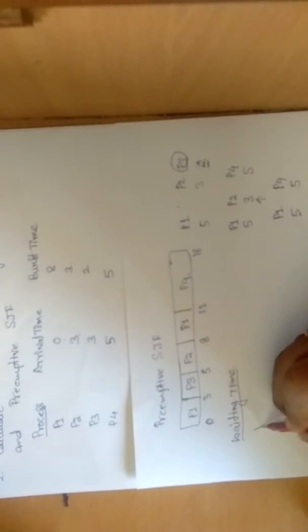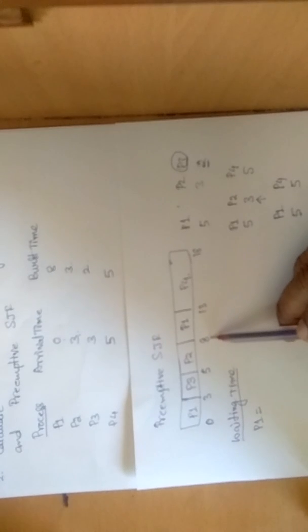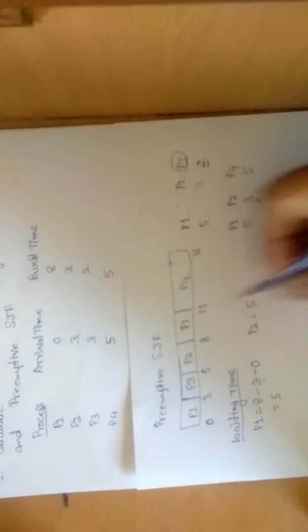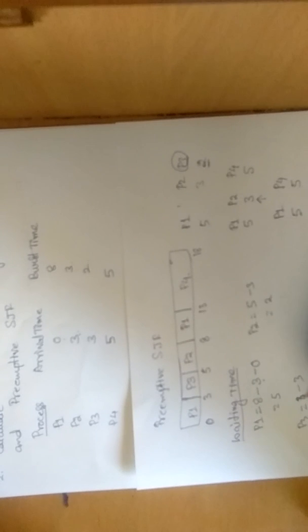Now we calculate waiting time. For p1: it last entered the CPU at 8, minus the 3 seconds it already executed earlier, giving a waiting time of 5. For p2: it started at 5, arrived at 3, so waiting time = 5 - 3 = 2. For p3: it started immediately at arrival time 3, so waiting time = 0. For p4: it started at 13, arrived at 5, so waiting time = 13 - 5 = 8.